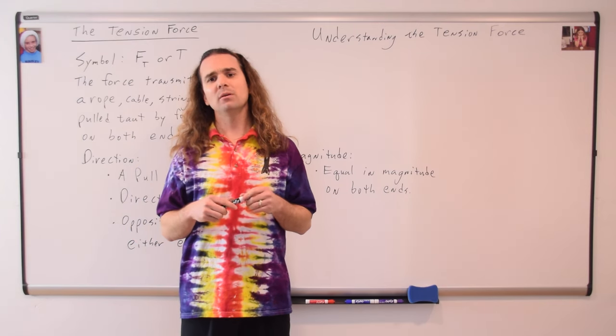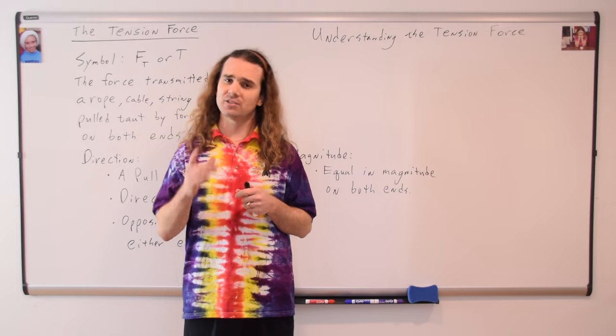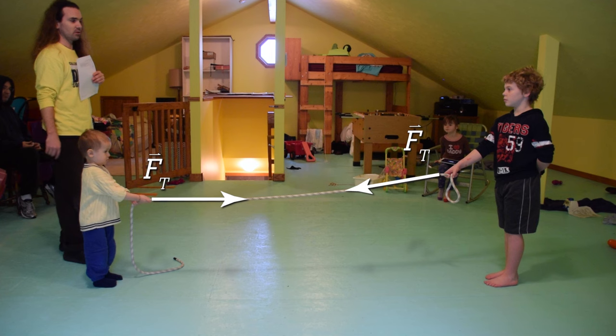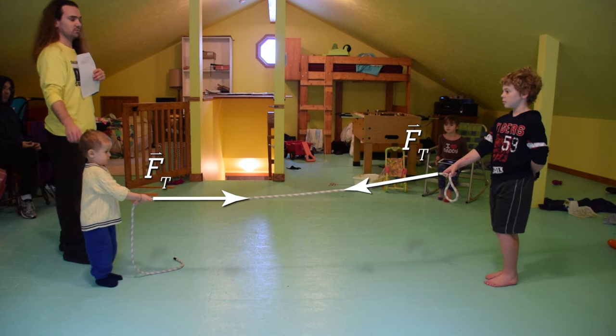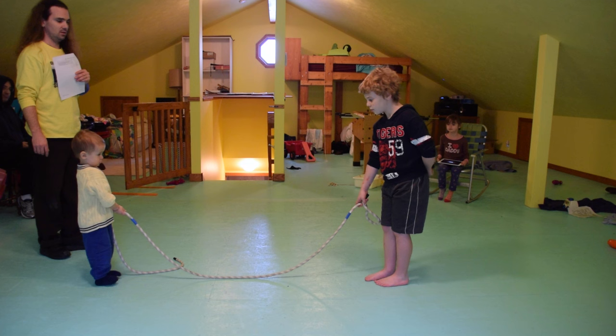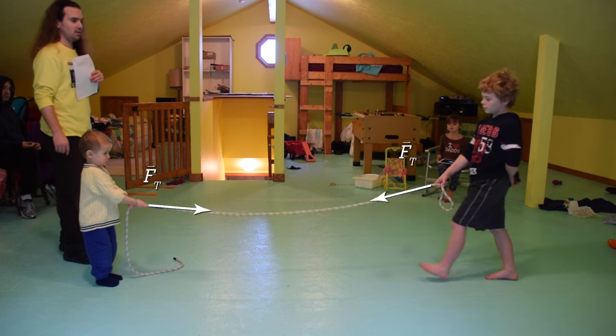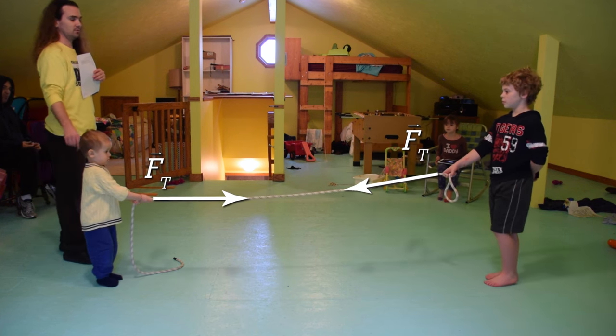Bobby asks: going back to just two kids, what happens to the tension force if they stop pulling on the rope? That is a good question, let's watch. The tension force goes to zero if they are not pulling on the rope, because the force of tension is always a pull and never a push.